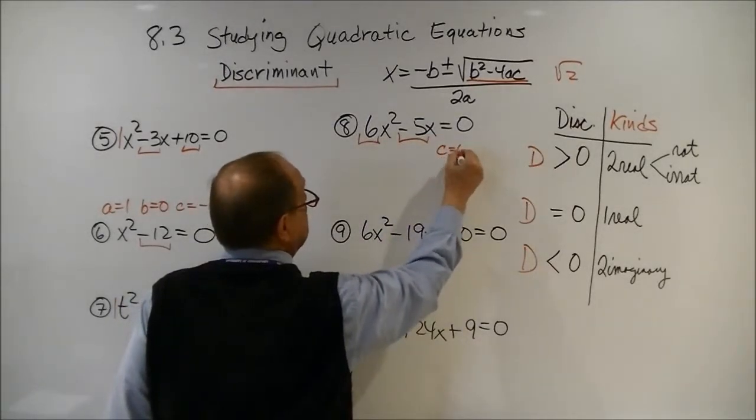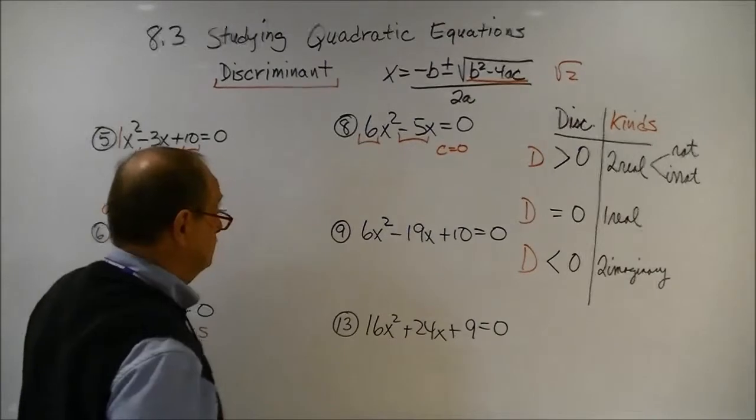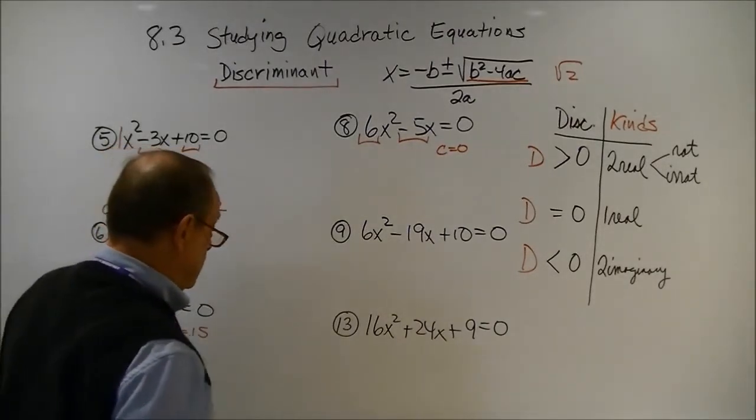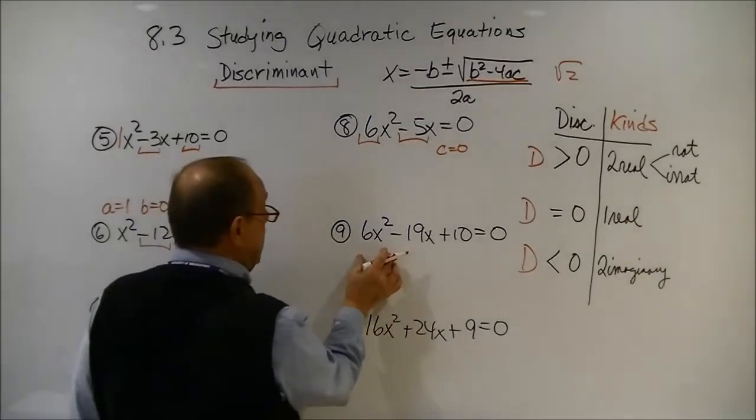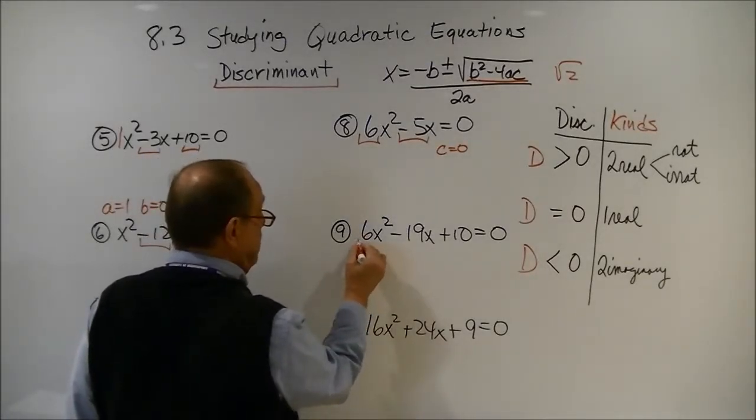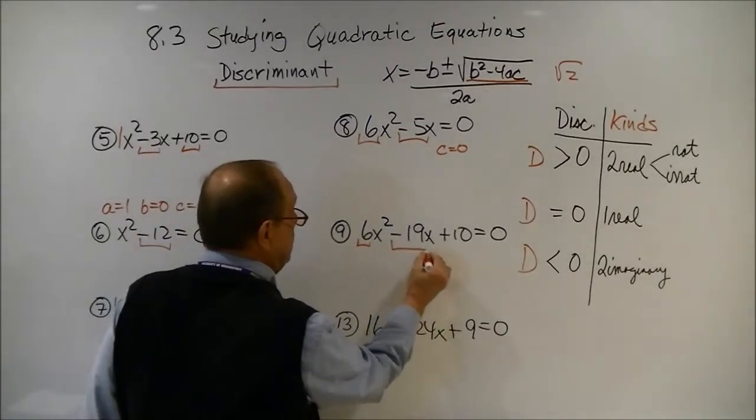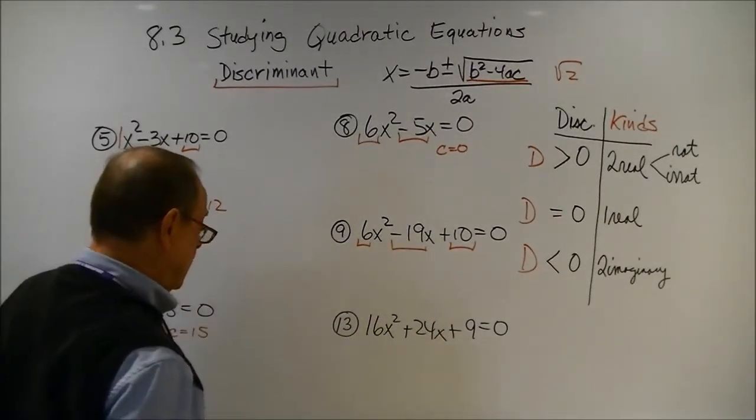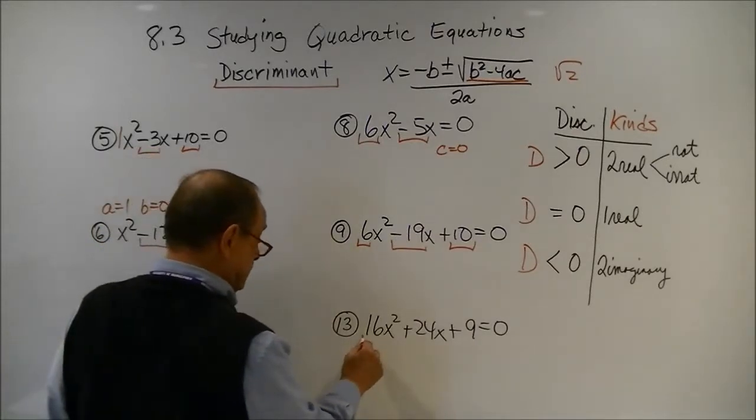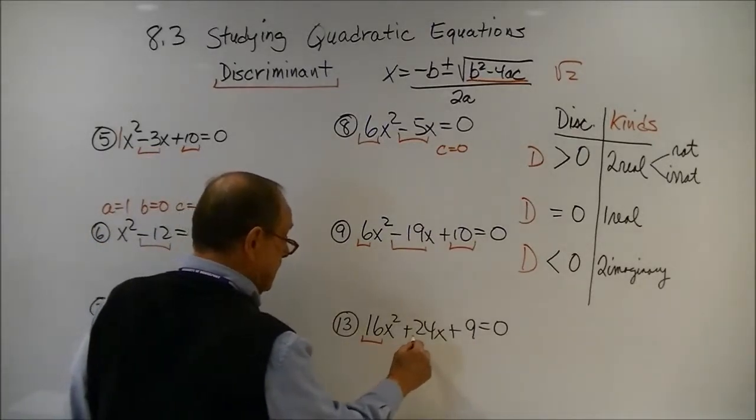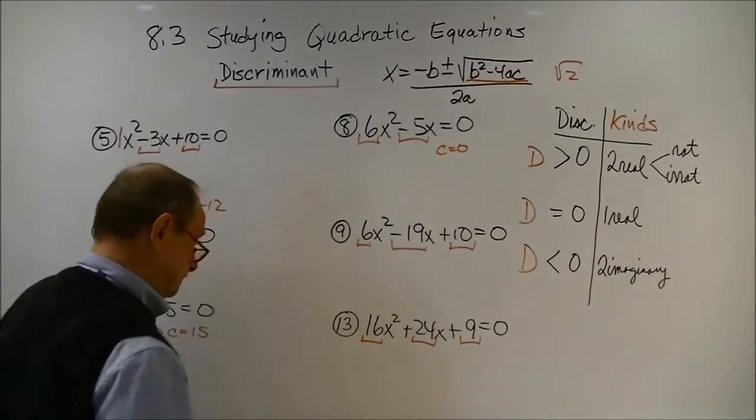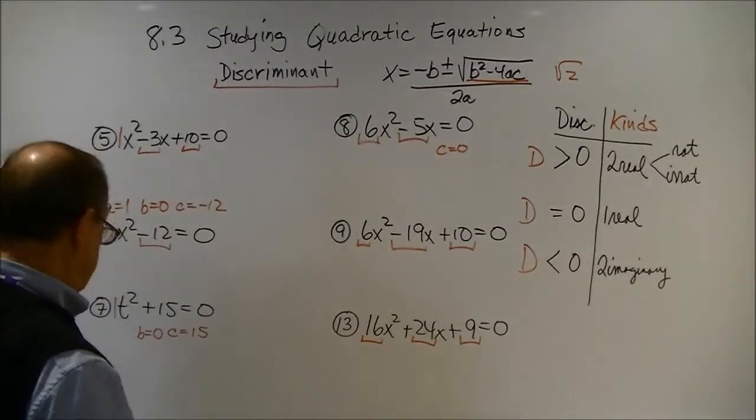Now, here we have an a of 6, a b of negative 5, but c is a 0. And, here, we have a is 6, b is 19, c is 10, and a, b, c.